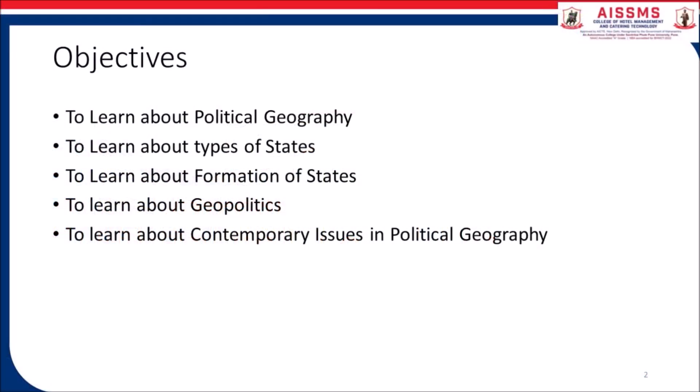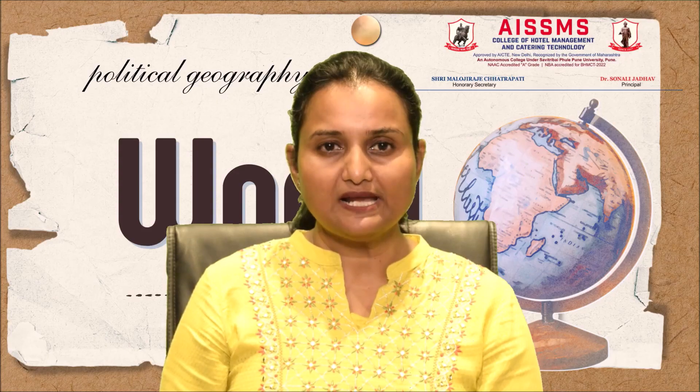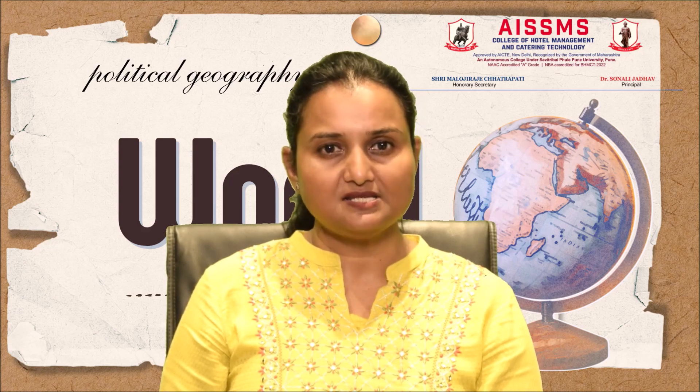Let's start our journey into the realm of political geography. Today we will understand the interplay between politics and geography. We'll explore the definition and the significance and various aspects related to this. In our world, as we know, there are seven continents and around 195 countries. It is a very vast world and we also have a very diverse geography, so it is very important for us to understand it in the light of politics.